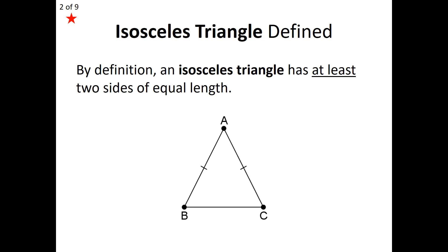By definition, an isosceles triangle has at least two sides of equal length. If we take a look at our diagram below, we have isosceles triangle ABC with the two sides AB and AC equal to each other. Now if we unravel the definition just a bit, it does say 'at least' — we'll talk about that in just a moment.